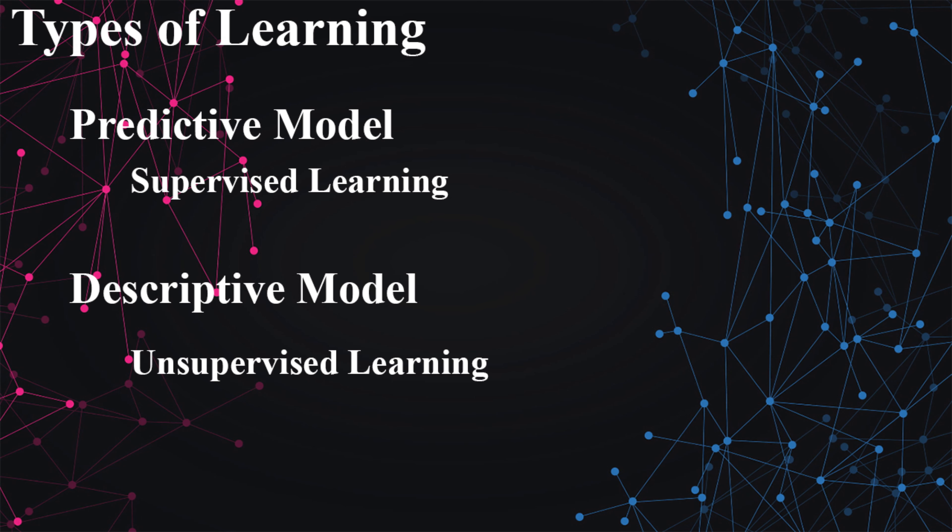These two types of learning can really be broken down into supervised learning and unsupervised learning. In predictive supervised learning, we have examples of input data and output data. In the stock example, we would have a previous history of input such as economic data and company performance measures, and how that stock performed over the next couple of months, and we'd use that to make predictions. In descriptive unsupervised learning, we only have the input data and don't necessarily know what the output is going to look like.